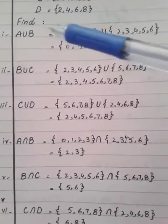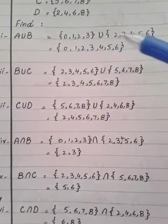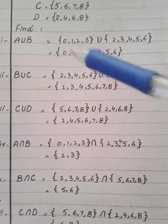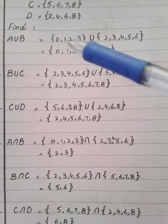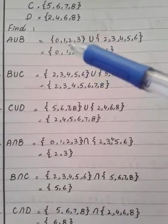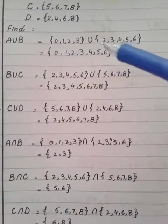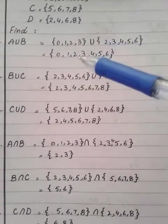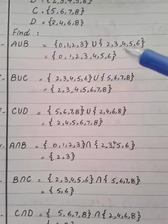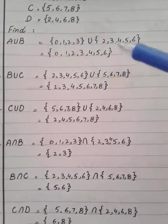For the solution: First, A union B — write set A, then set B, and in the union set you write all elements of both A and B. Take 0 and 1 from set A, then 2 is common to both so write it only once, then continue with 3, 4, 5, 6. Combine all elements and write them together — that is the union.